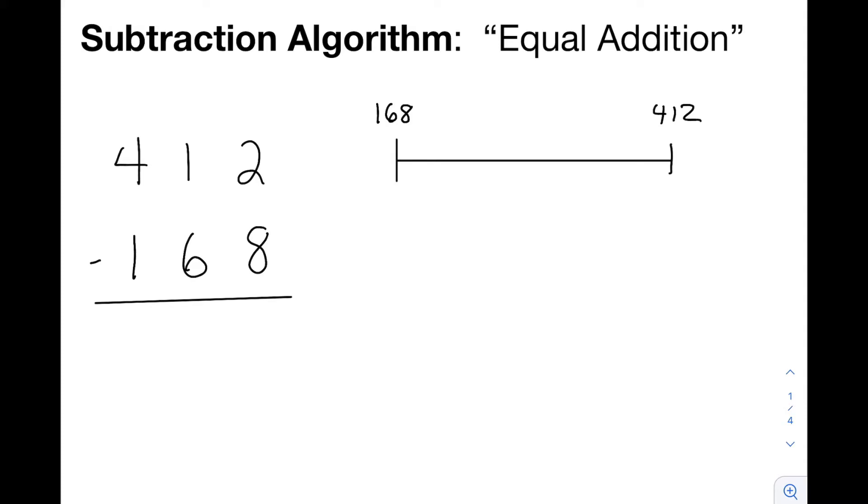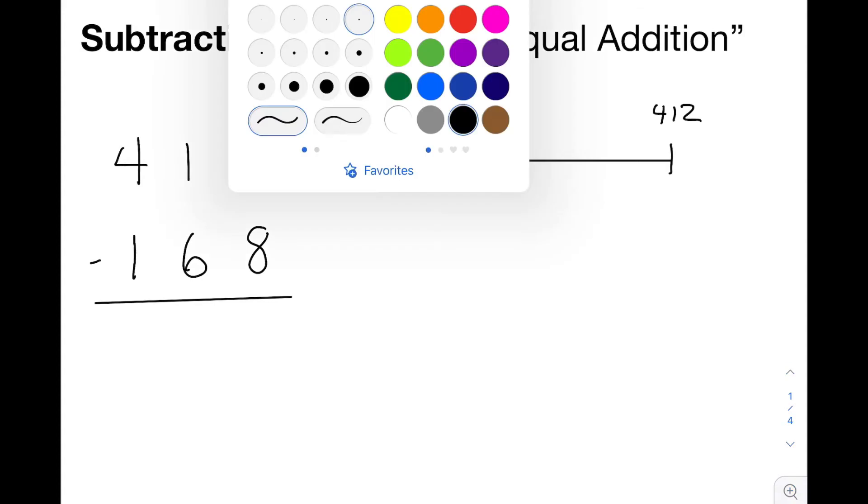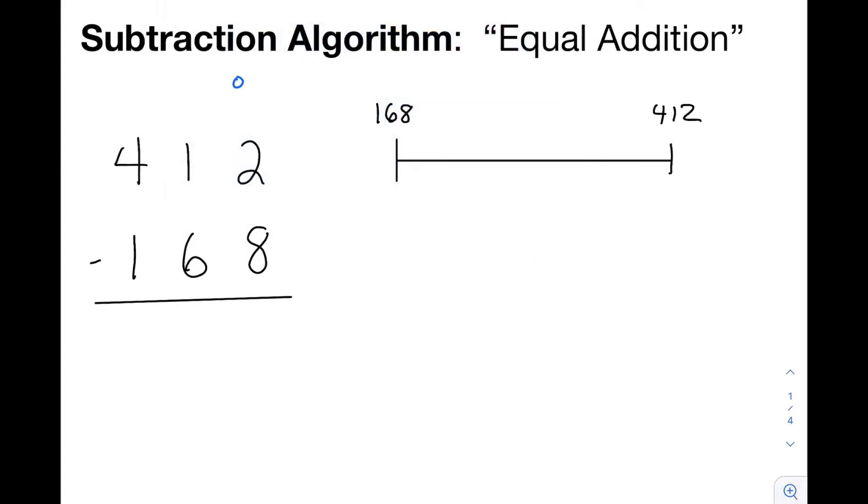Now I'm going to put a whole lot of information down that we wouldn't actually write down while we were using the algorithm. This is just to help us understand why it makes sense. So let's remind ourselves that we have the ones place, the tens place, and the hundreds place. And we're going to be using the fact that if we shift both numbers in the same direction, the same amount, we haven't changed the distance between the numbers.